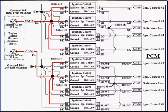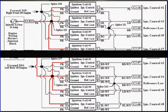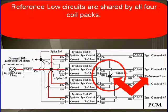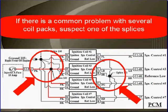Each coil pack has a four-wire connector. Make sure you use a vehicle-specific wiring diagram. We're going to divide this one in half and look at only one bank of the coils. B+ and ground are shared by all coil packs - there's a splice for B+ and a splice for ground. Reference low circuits are shared by all four coil packs and have their own splice. If there's a common problem with several coil packs, suspect one of these splices. Splices have high failure rates when working on any wiring problems.